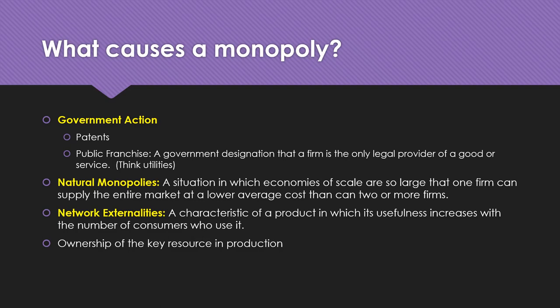Think about all the pipes, easements, land, wiring, connections, contracts, and costs it took to build utility infrastructure for water, electricity, or natural gas. If another electric company wanted to build comparable infrastructure — running wires side by side to existing wires going to your house — it would be prohibitively expensive and would eliminate competition. So natural monopolies and public franchises often go hand in hand.